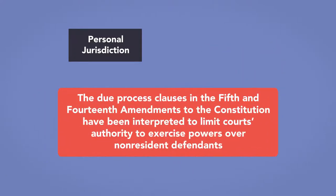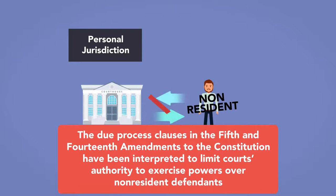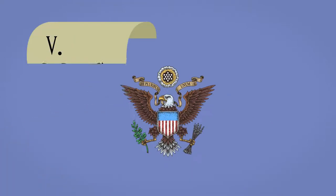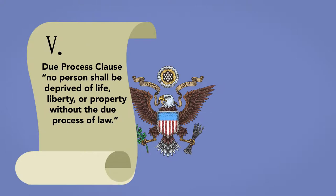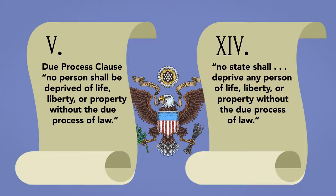The due process clauses in the 5th and 14th Amendments to the Constitution have been interpreted to limit a court's authority to exercise powers over non-resident defendants. The Due Process Clause of the 5th Amendment states that no person shall be deprived of life, liberty, or property without the due process of law. The 14th Amendment, which extended the principle of due process to state and local governments, states that no state shall deprive any person of life, liberty, or property without the due process of law.